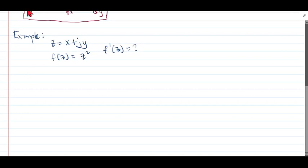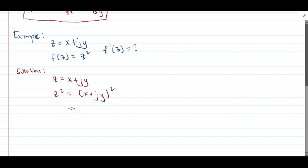So the first thing to do is to get z squared. Our z is equal to x plus j of y, so z squared is equal to x plus j of y, squared. We will have x squared plus 2jxy plus j squared y squared. We'll treat this as a perfect square trinomial, so our answer will be a perfect square trinomial.